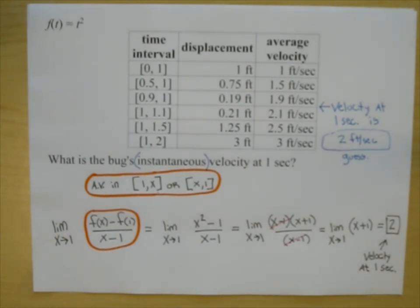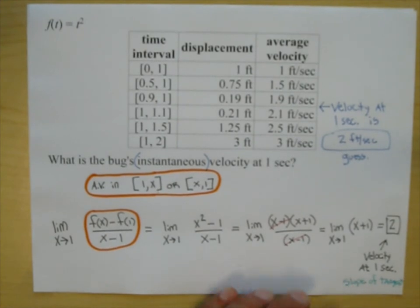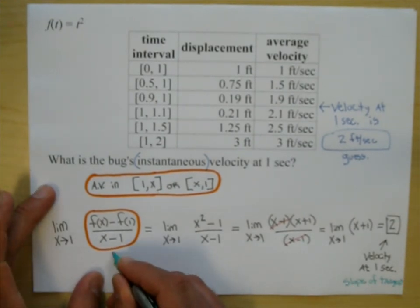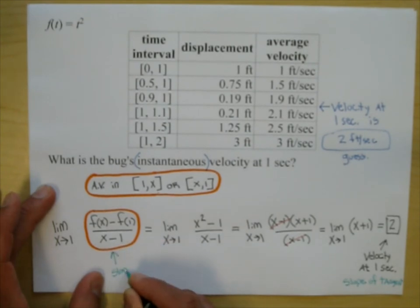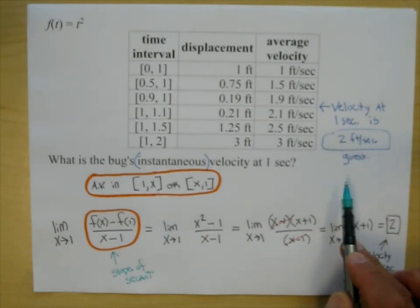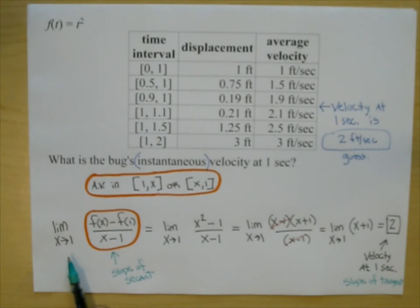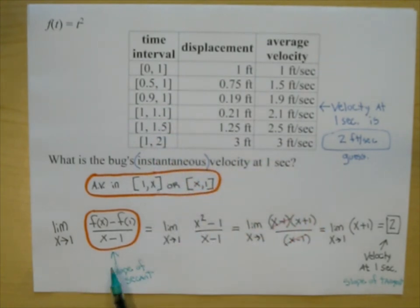The instantaneous velocity is the slope of a tangent line, and the average velocity — this orange part — is the slope of secant lines. This is how we do it. We don't have to make a guess. We say the average velocity from 1 to x or from x to 1 is this expression, then take the limit as x approaches 1. We got the slope of the secant, and we approached 1 from both sides.